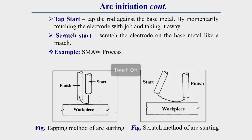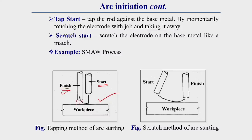In the tapping method, the electrode is tapped against the base material. By momentarily touching the electrode with the workpiece and then lifting it away, an arc is started at the final position. This is the tapping method, used in manual metal arc welding (SMAW).